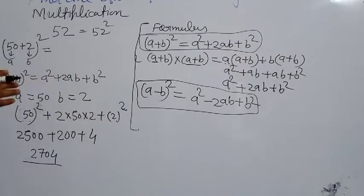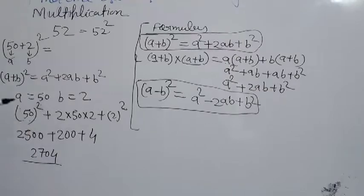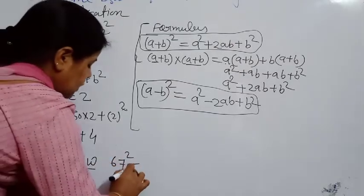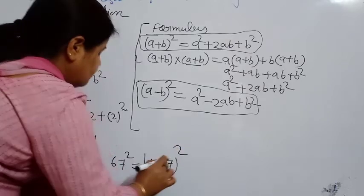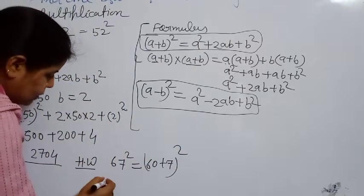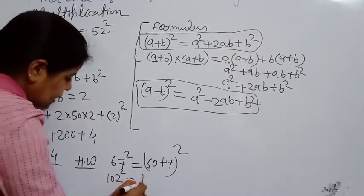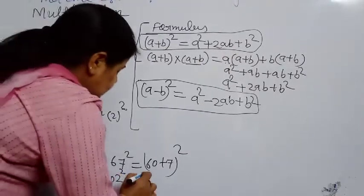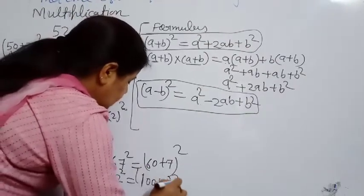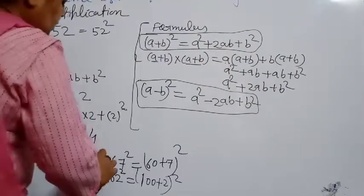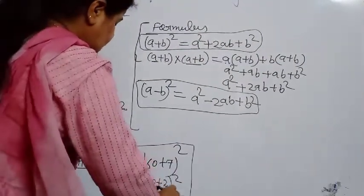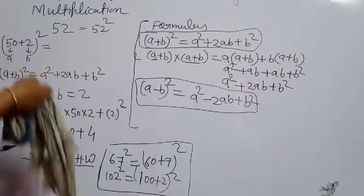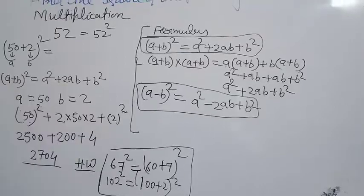Next, as homework: find 67². Write it as (60 + 7)² and solve the same way. Also find 102² — write it as (100 + 2)² and apply the formula. These two are your homework — solve them and send to me.